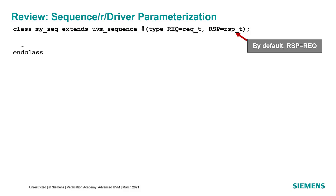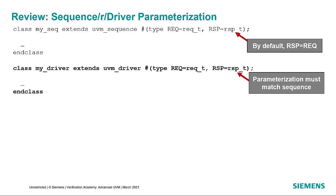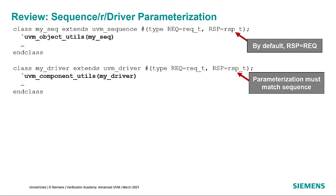For the sequencer and driver to talk to each other, they must all be parameterized in the same way. The sequence requires two type parameters — one for the request type and one for the response type. By default the response type is the same as the request type, so specifying one type parameter means both use that type. Similarly, the driver also has request and response type parameters that must match the sequence. Both the sequence and the driver are extended from base types in UVM, and both may be swapped out via the factory, so we register the extended types using the utils macro — object_utils for the sequence and component_utils for the driver.